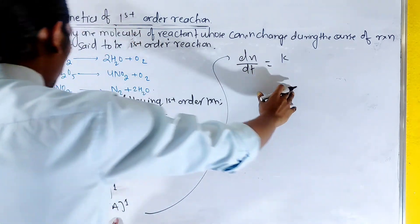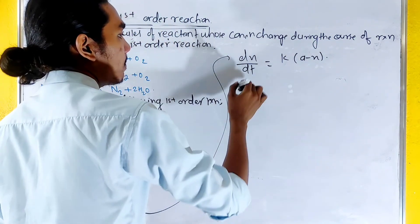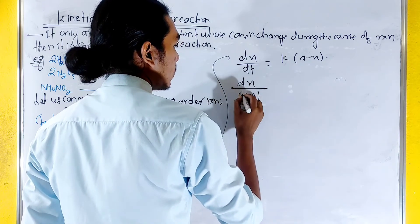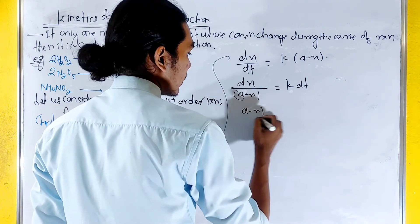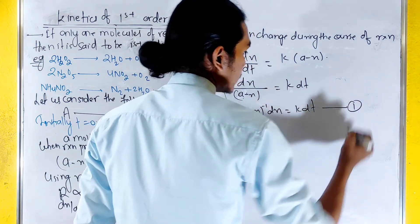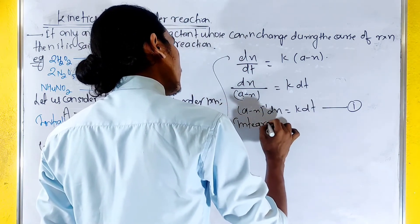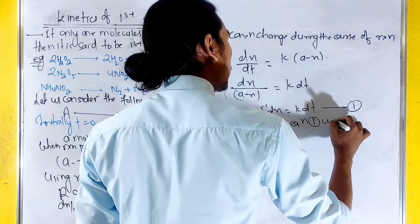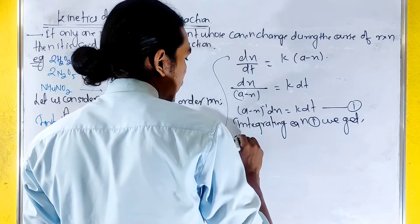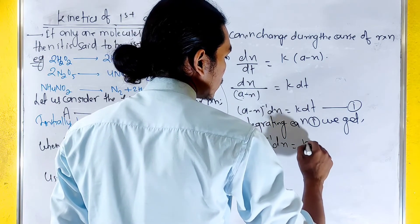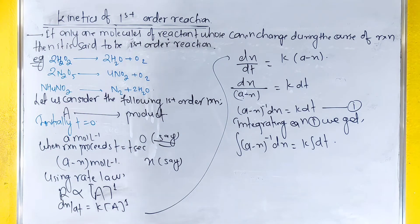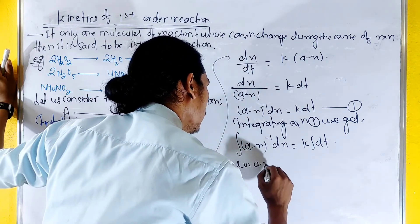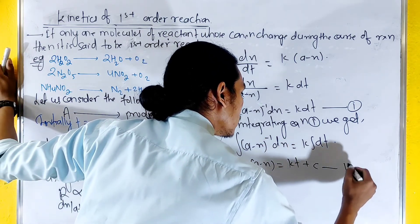Here 'a' in the equation means (a minus x). So rearranging, dx divided by (a minus x) equals k dt. This is equation 1. Integrating equation 1: integral of (a minus x) to the minus 1 dx equals integral of k dt. The integration of 1/x is log, so we get: negative log(a minus x) equals kt plus C. This is equation 2.